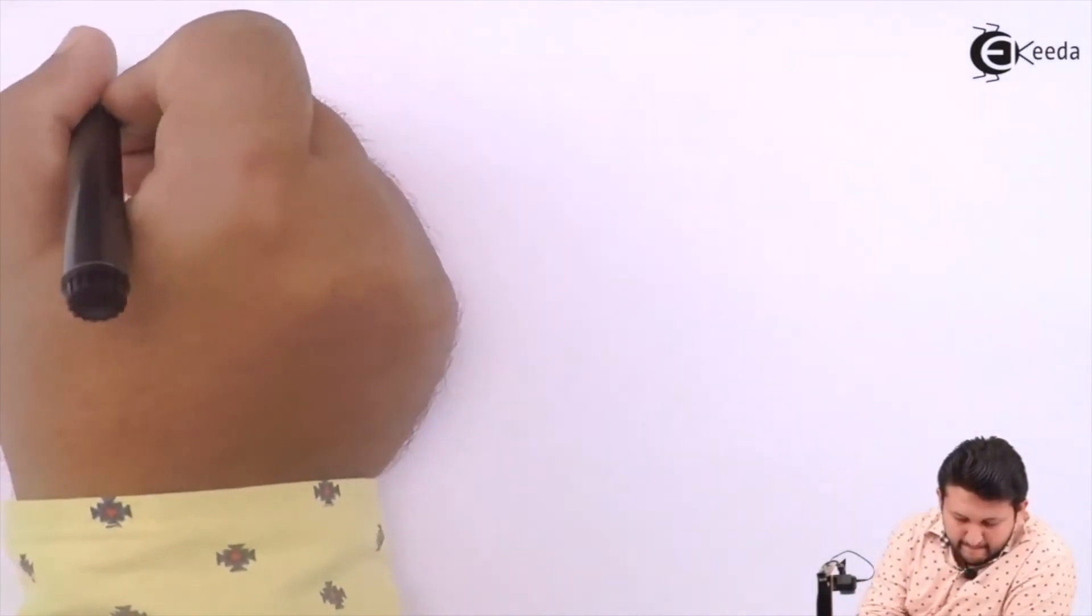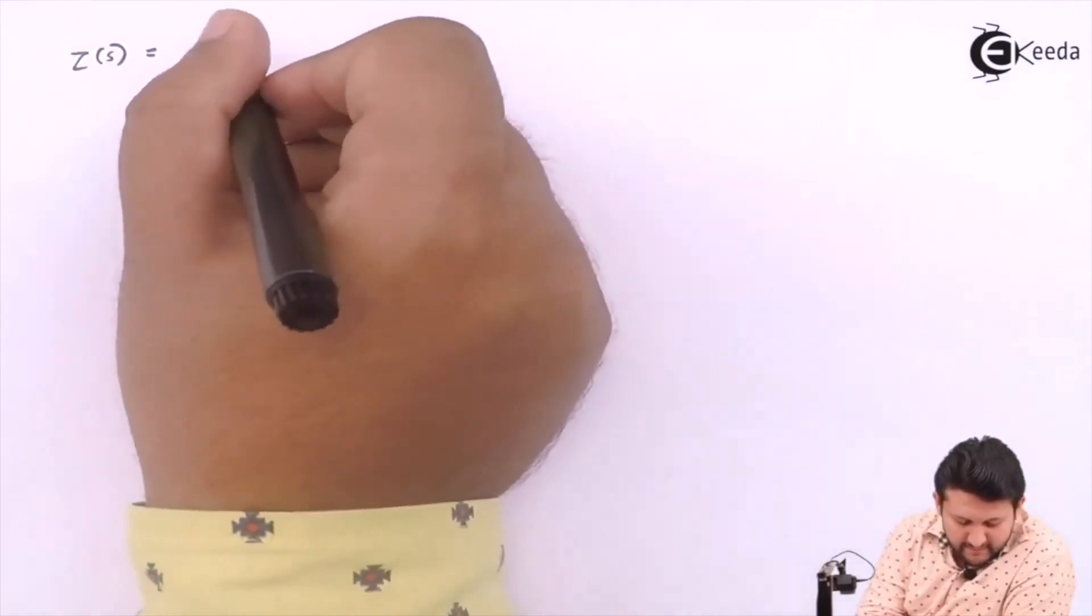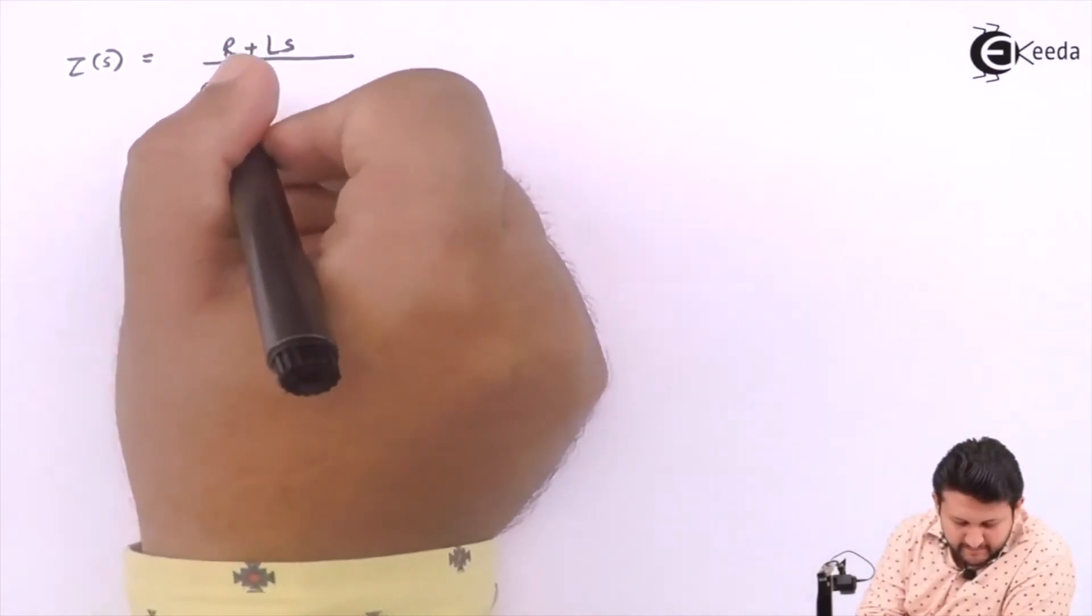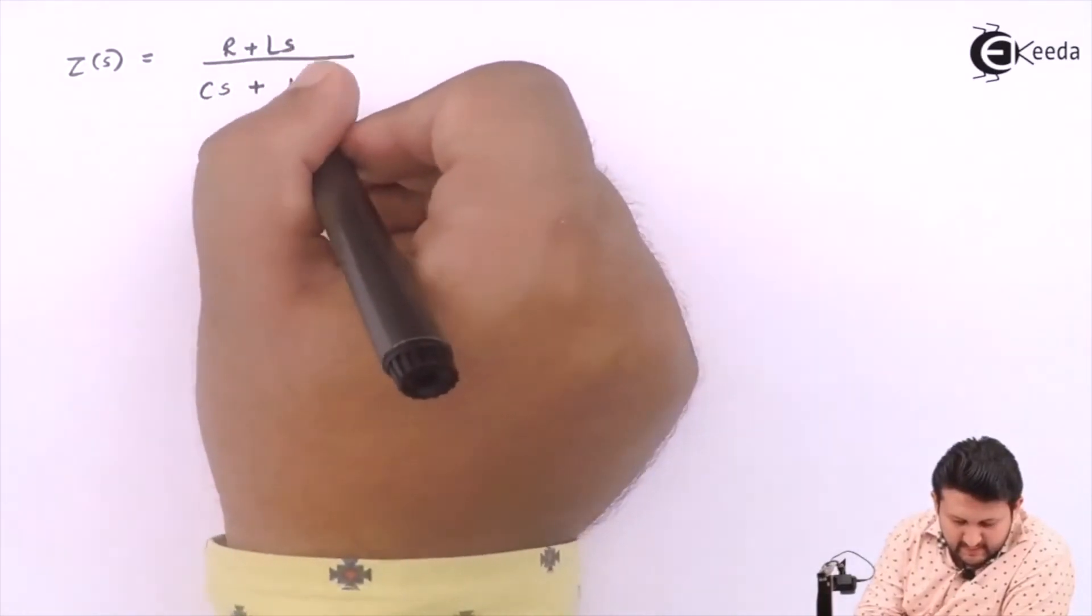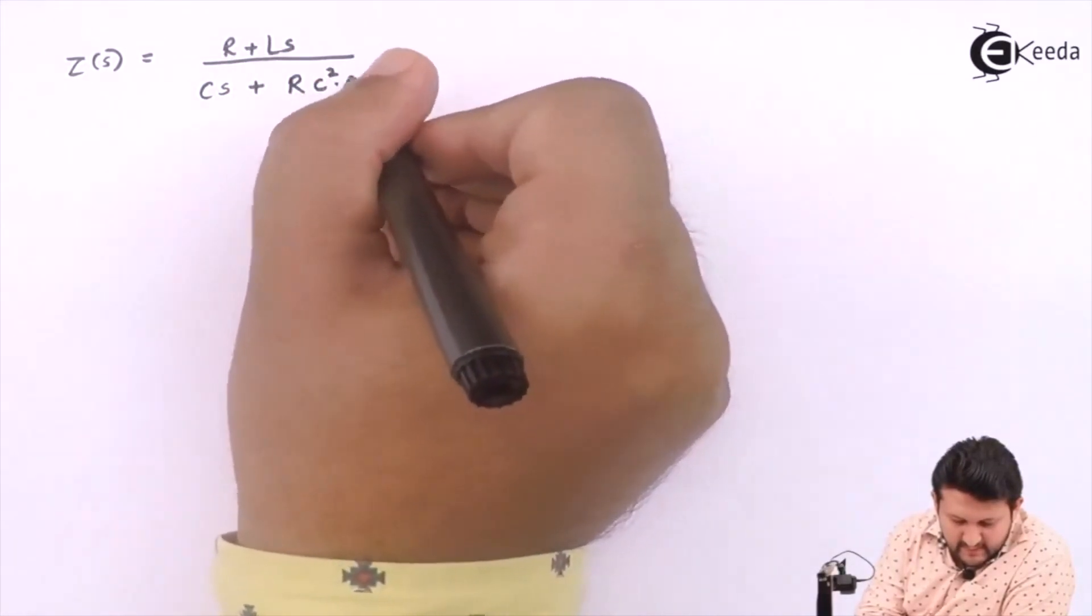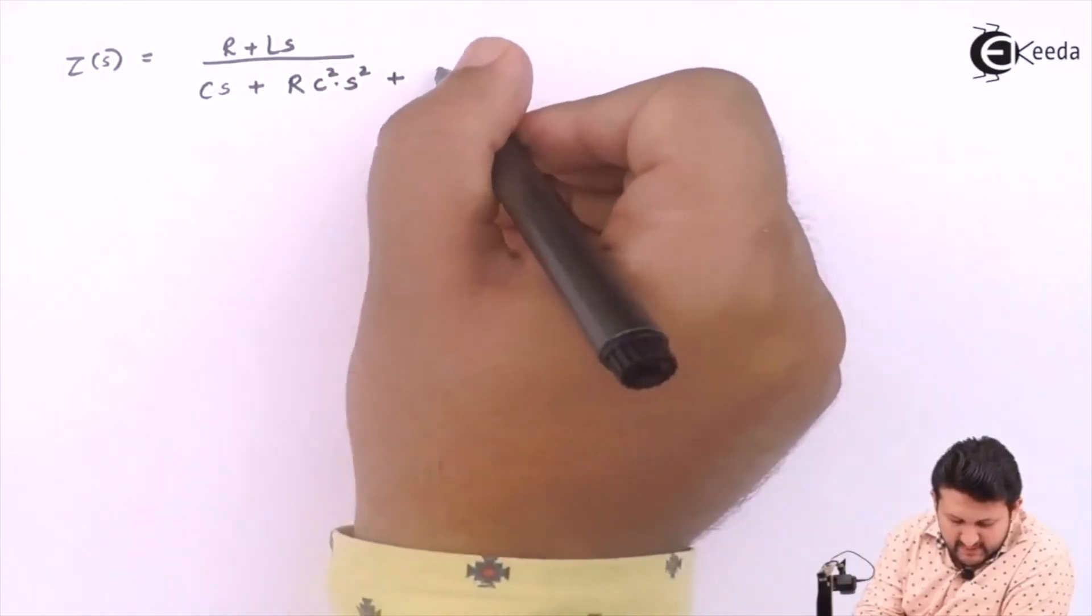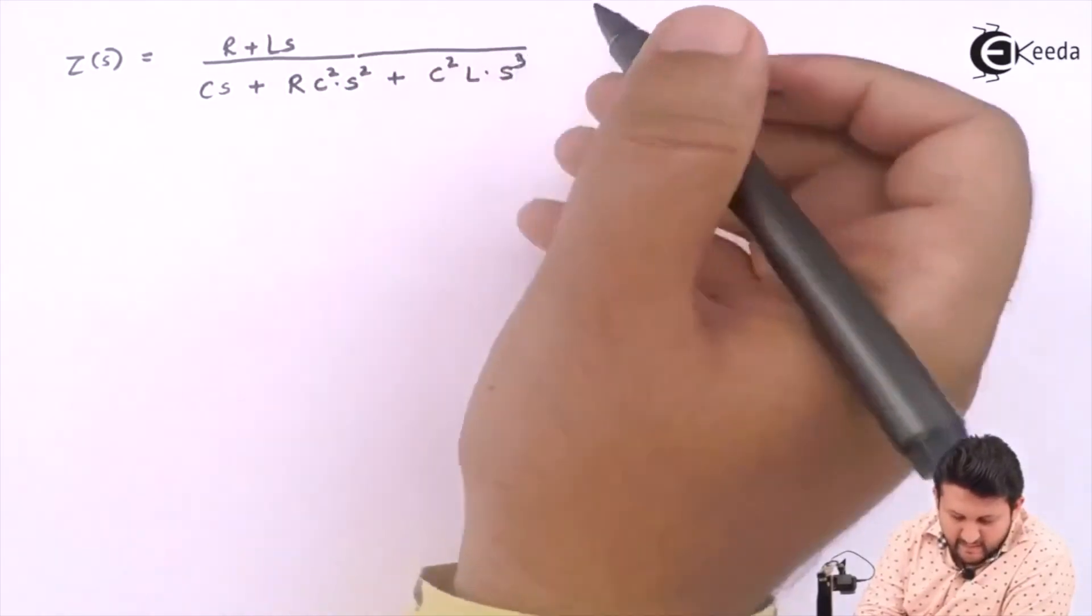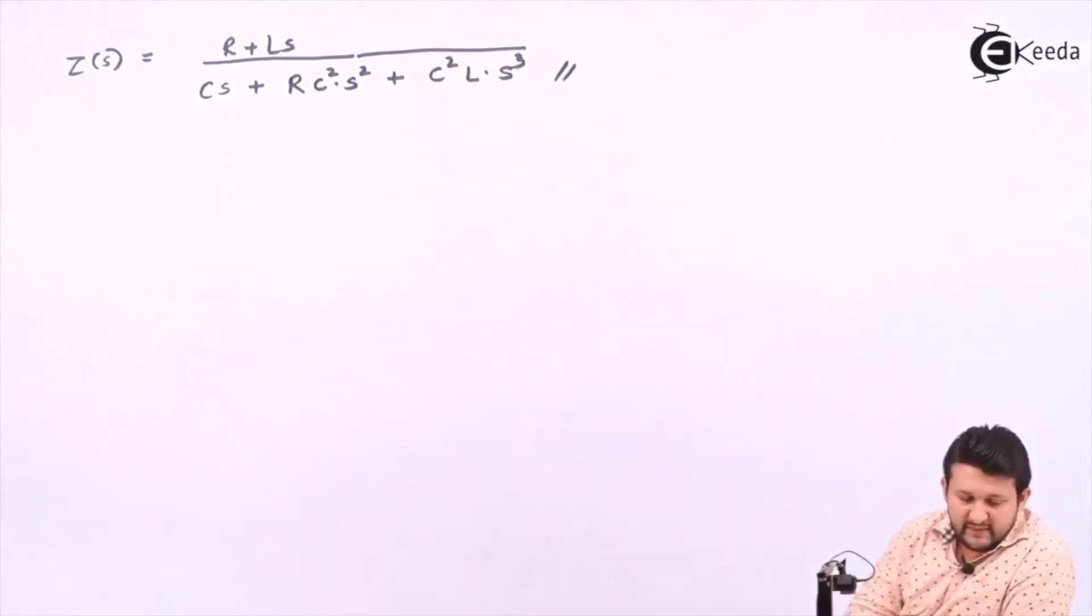So the equation for Z of s equals R plus Ls, whole upon Cs plus RCs squared plus CLs squared. So that's the value for Z of s.